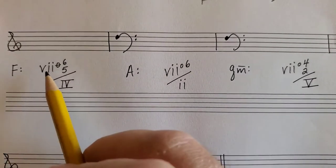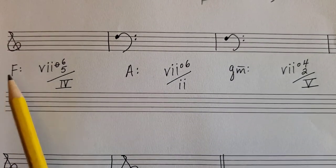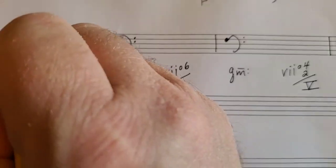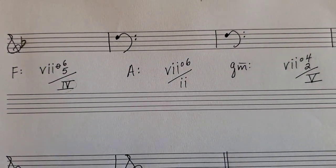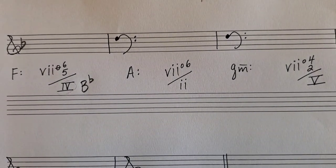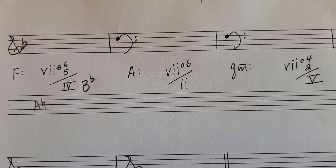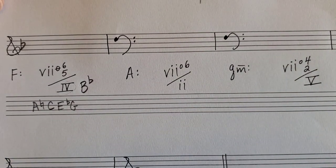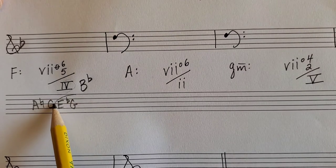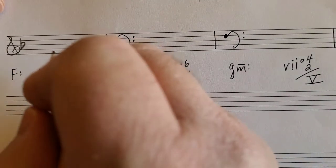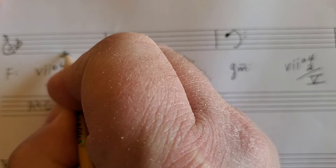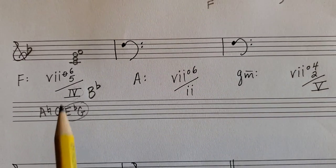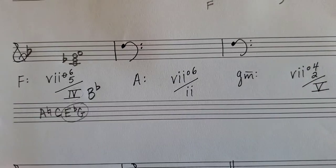Next: F major, viiø6/5/IV. Notice we're tonicizing a major triad, so half diminished is possible; fully diminished is also possible. One flat in the key signature. IV in F major is B-flat. The leading tone of B-flat is A natural. Spell the half diminished chord: A, C, E-flat, G. A half diminished chord has a diminished triad with a minor seventh — or equivalently, a major third between the fifth and seventh. C goes in the bass for 6/5 position. Mark in the E-flat; A natural is already there, G remains G natural.